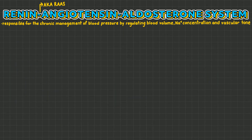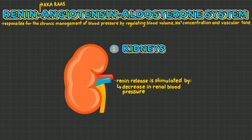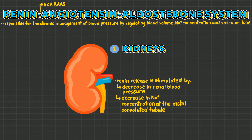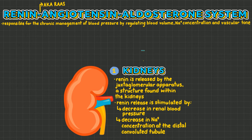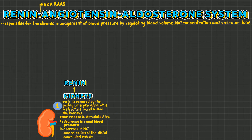When the kidneys sense a decrease in renal blood pressure or a decrease in sodium concentration at the distal convoluted tubule, the juxtaglomerular apparatus, a structure found within the kidneys, releases renin.